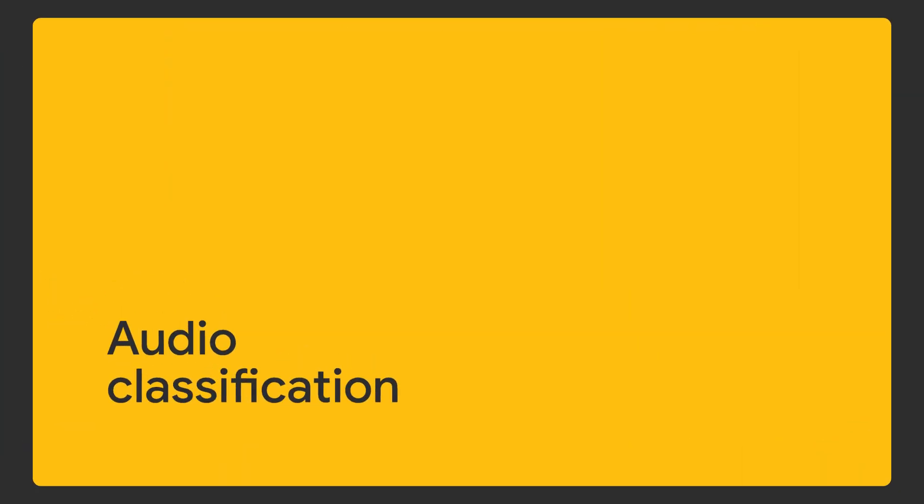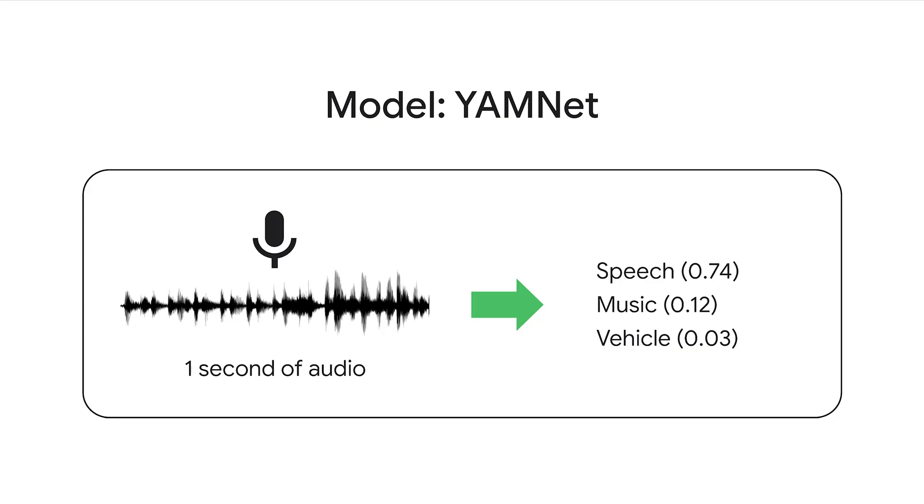Now your Raspberry Pi has been set up. Let's write a Python program to recognize the sound picked up by the microphone. In machine learning, this task is called audio classification. We use a TensorFlow Lite audio classification model called Yamnet to write this program. Yamnet can recognize 521 different types of sounds such as music, speech, vehicle, cat mewing, and many more.